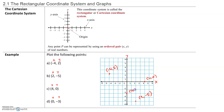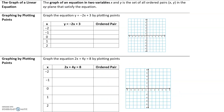From plotting points, we are going to talk about graphing lines by plotting points. The graph of an equation in two variables is a set of all ordered pairs in the plane that satisfies the equation, which means any point that when you plug in the x and the y makes the left side equal to the right side, that point will be on the line.